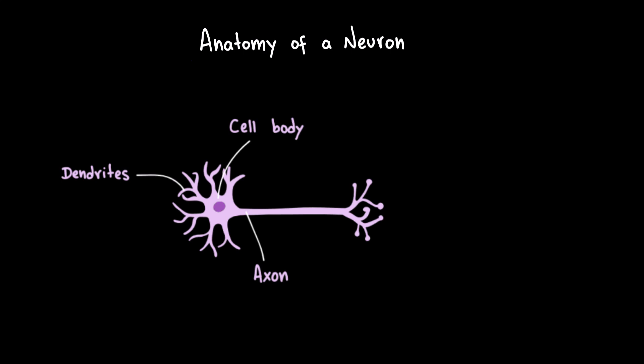Axons can be very short or extremely long. In fact, some can run the entire length of a limb. At the end of the axon are the axon terminals, where neurotransmitters are released to communicate with the next cell, whether that's another neuron, a muscle fiber, or a gland.